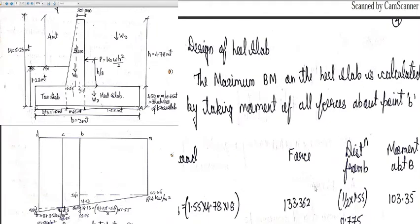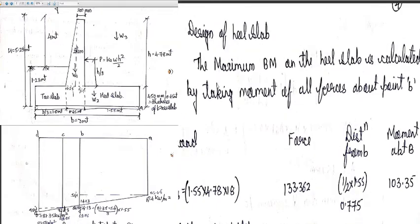After the pressure distribution, we proceeded with the heel slab design. The heel slab is a rectangular portion of 1.55 m by 450 mm. The maximum bending moment is calculated by taking the moment of all forces about point B, which lies at the junction of the stem and heel slab. Forces acting include the self-weight of the heel slab, self-weight of the earth above it, and the upward soil pressure.